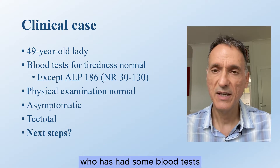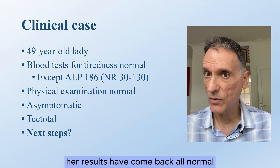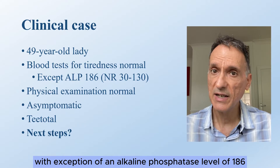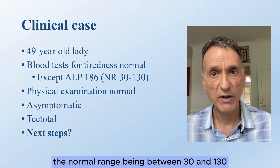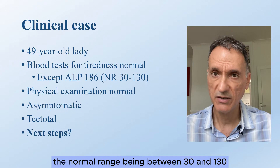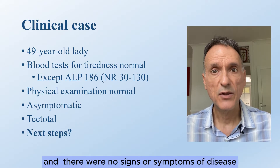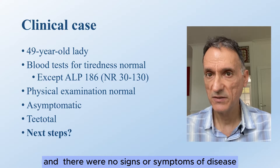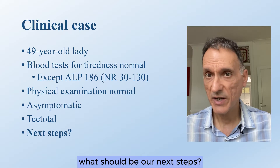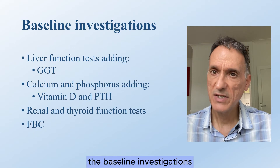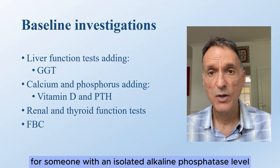Let's have a look at our patient. She's a 49-year-old lady who had blood tests because she was feeling a little tired. Her results came back all normal with the exception of an alkaline phosphatase level of 186, with a normal range between 30 and 130. Physical examination was normal, there were no signs or symptoms of disease, and she does not drink alcohol at all.